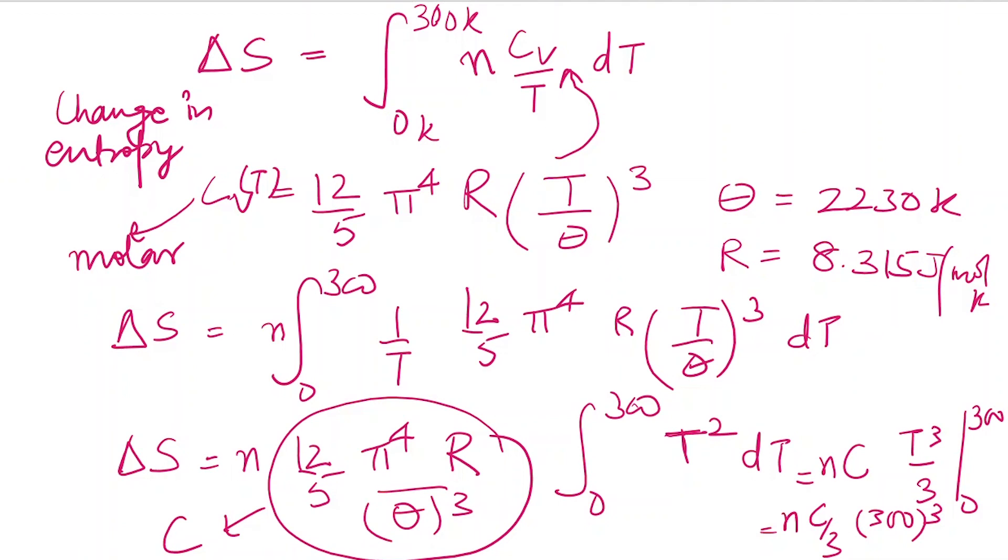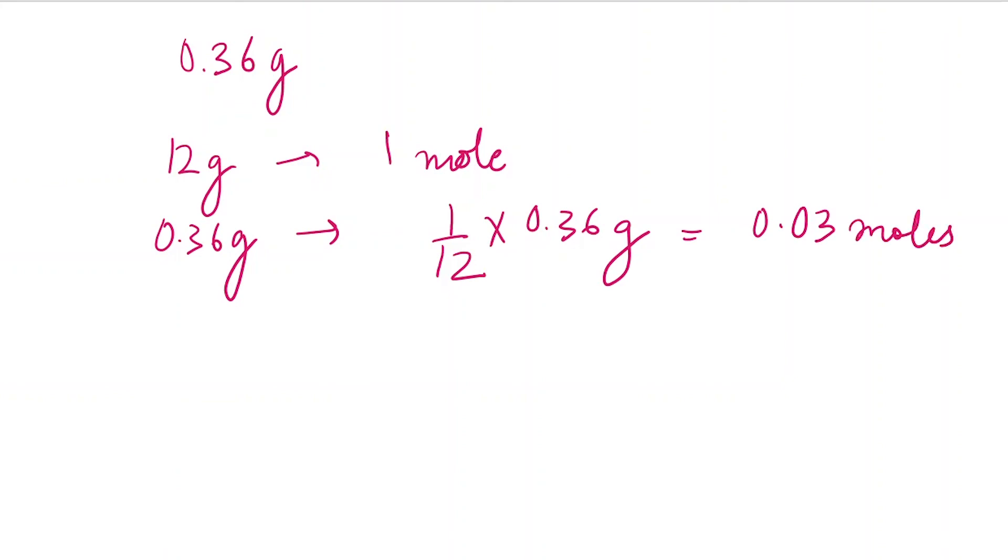Next, we are given 0.36 gram of diamond, so we have to convert this into moles. We know it's carbon, so 12 gram equals one mole. Therefore, 0.36 gram equals (1/12) × 0.36 = 0.03 moles. We put this value in.